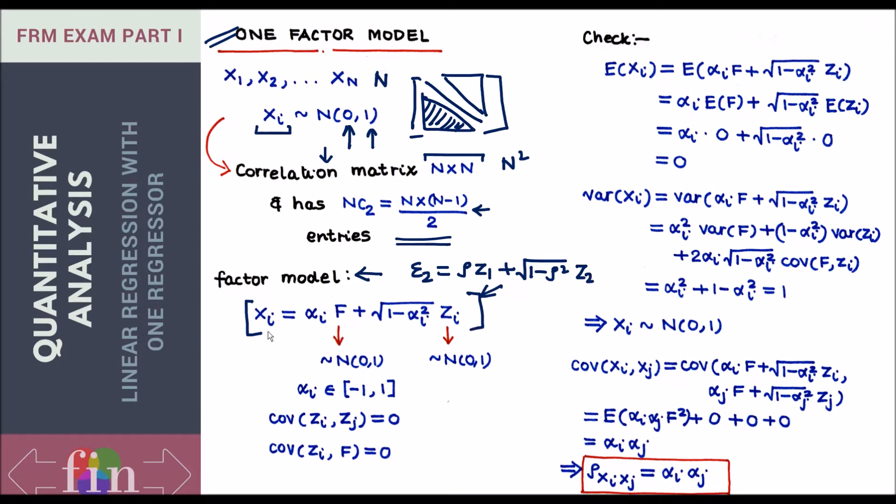What we are saying here is that let us express this guy xi, the return of the ith asset, to be a combination of returns coming from two assets. Let the first asset be what I call f - f means the factor, that's why it's called a one factor model. This is the f plus some weight times a second guy, let's call it zi. Now zi is an asset which is unique to my original asset xi. That is why I have indexed it with the same letter i. So for every original asset in my portfolio, x1, I would need a new z1, x2 z2 and so on.